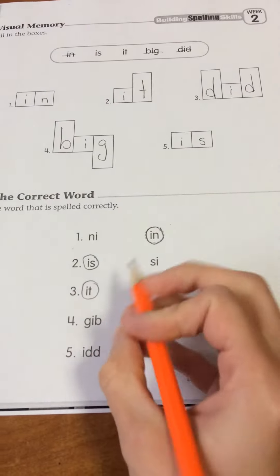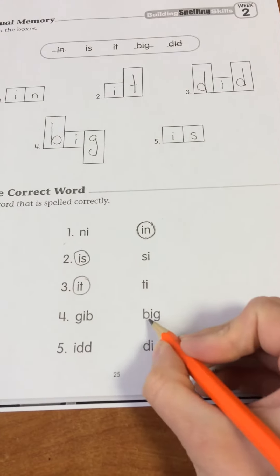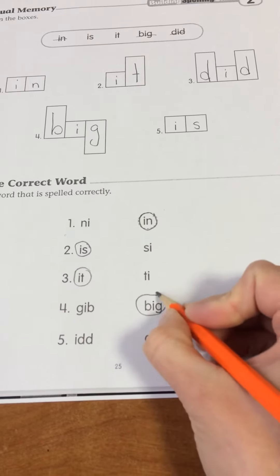Now number four. We have G, I, B, which says gib. Or we have B, I, G, which says big. Big is our word.